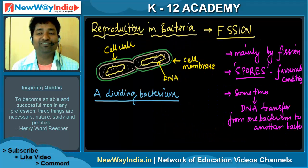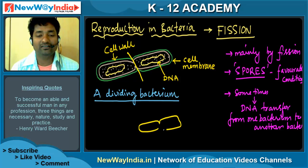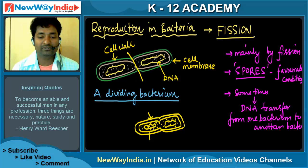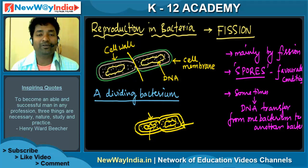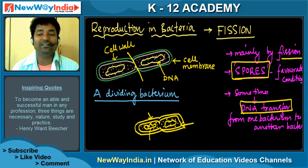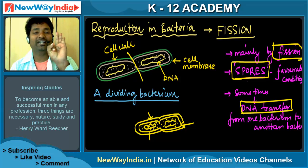Reproduction in bacteria is mainly through fission — dividing. For the diagram, you draw dividing bacteria with the cell wall, genetic material, DNA, and cell membrane. Reproduction in bacteria is mainly through three methods: one is fission, second is through spores in favorable conditions, and third is through direct DNA transfer from bacteria to bacteria.